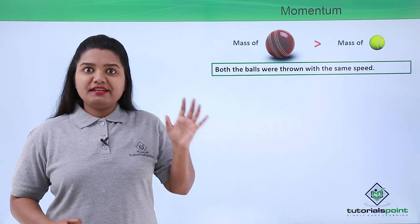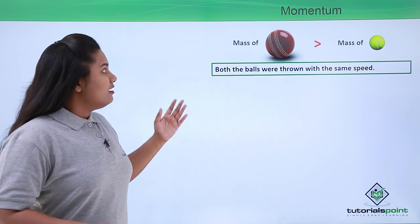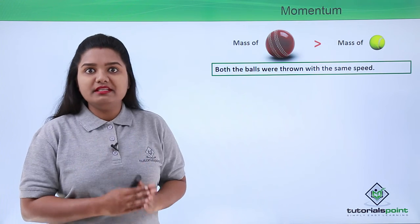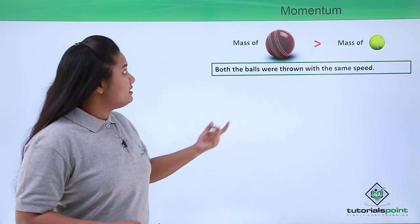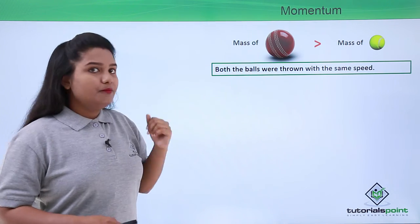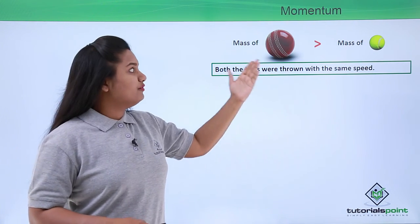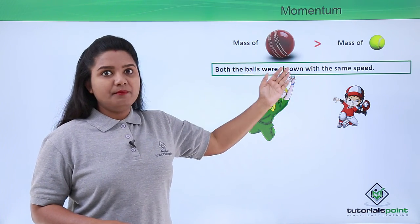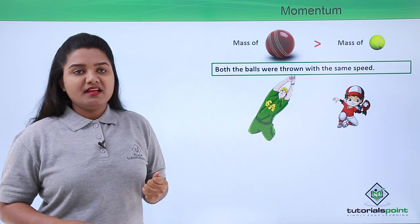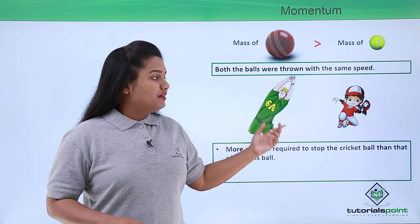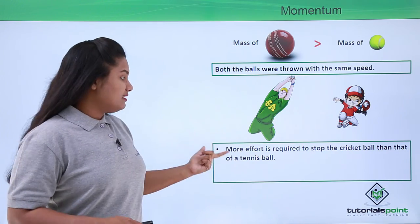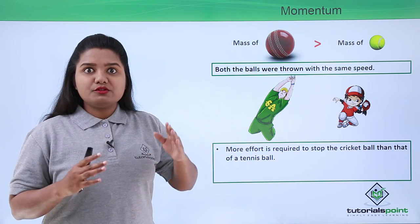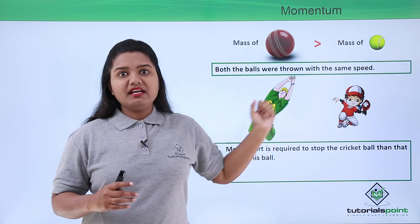Let's say these two balls were thrown with the same speed. Now when we want to stop these two balls, since the mass of the cricket ball is more compared to the tennis ball, it will be harder for us to stop the cricket ball. So more effort is required to stop a cricket ball than a tennis ball, which means we need to apply more force to stop the cricket ball.